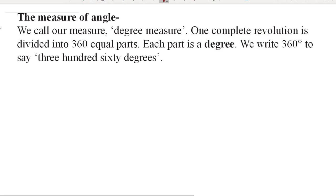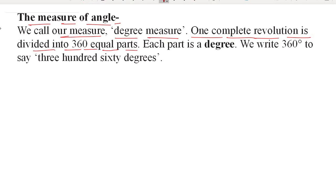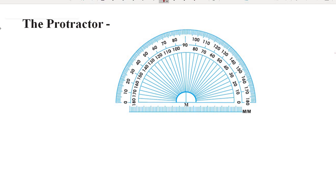The measure of an angle is called the degree measure. One complete revolution is divided into 360 equal parts and each part is a degree. We write 360 degree as 360°. You can find a readymade protractor in your instrument box. The curved edge is divided into 180 equal parts, and each part is equal to a degree.